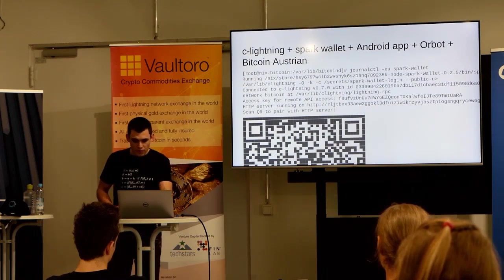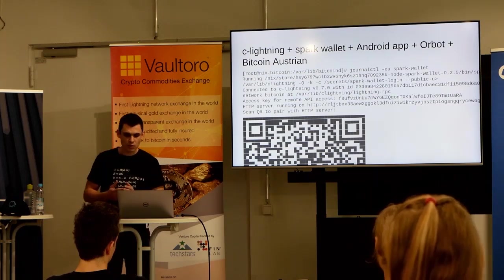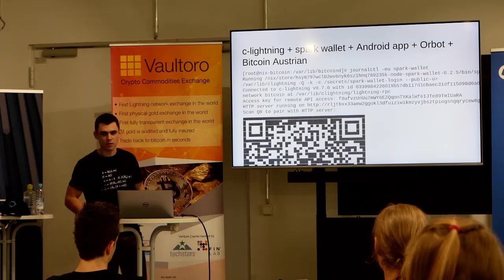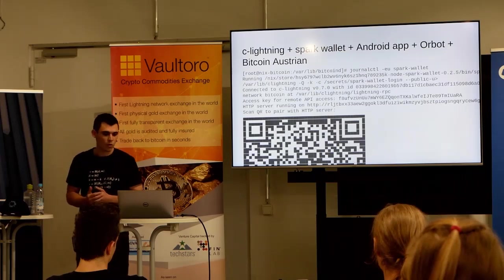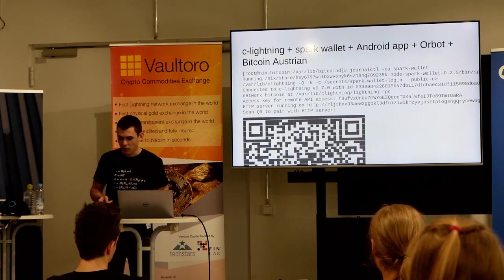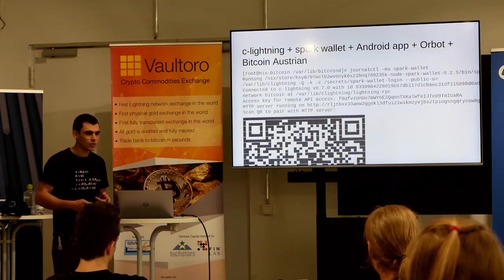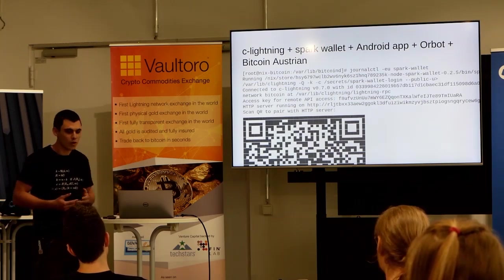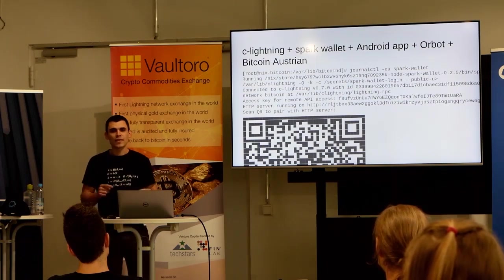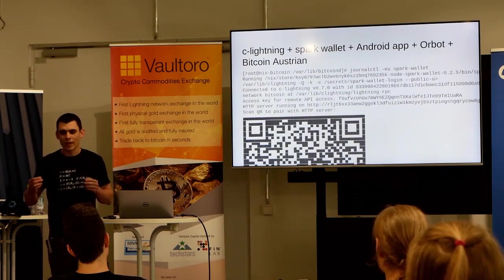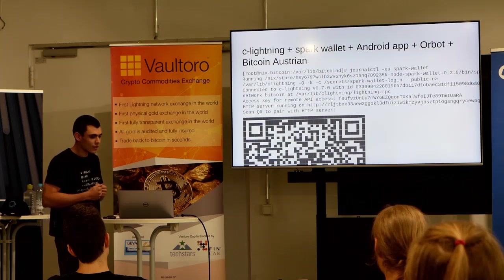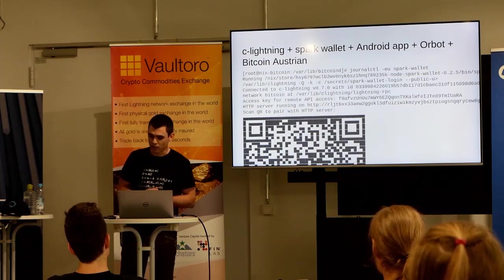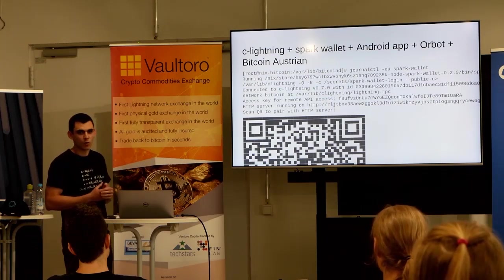How do you pair this with your Android wallet? You just look into the logs of Spark Wallet — journal CTL Spark Wallet — and you see a QR code; you scan it and then you're basically connected if you have Orbot set up. You need to be a Bitcoin Austrian right now because you need to view Satoshi as a unit of account, since the translation into US dollars doesn't really work with our app right now. This is an interesting bug because we've restricted the Spark Wallet service to only be able to get out of NixBitcoin through Tor, and Bitfinex doesn't allow Tor requests.